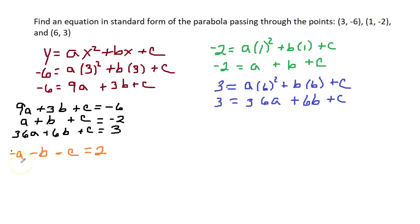So, I have 9a plus 3b plus c equals negative 6. Add, negative a plus 9a gives you 8a. Negative b plus 3b gives you plus 2b. The c's cancel. Equals negative 4.